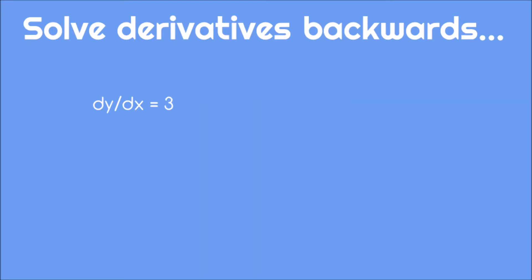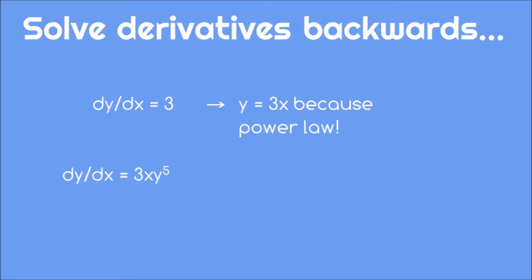Here's an example. Suppose you know that function y obeys this derivative, dy/dx equals 3. You can pretty easily reverse engineer this into the original function, 3x, and check that it works. But physics and engineering usually give you more complicated equations, which even the best mathematicians can't solve by hand.